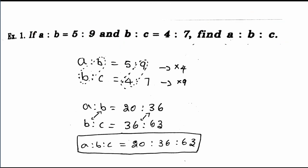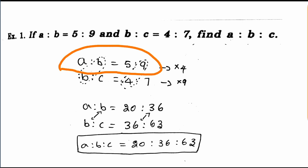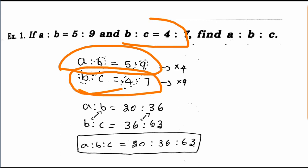I am going to show a method. First question: a is equal to 5 is 9. Second question: b is equal to 4 is 7.